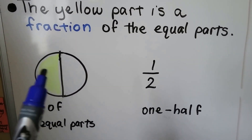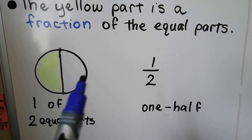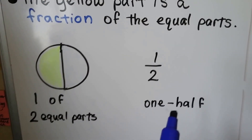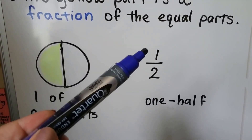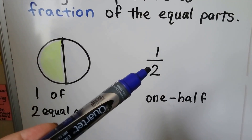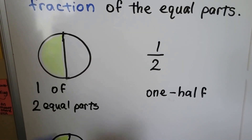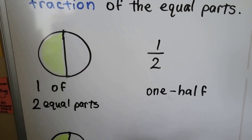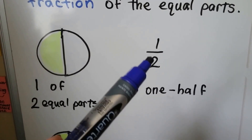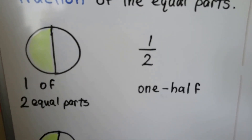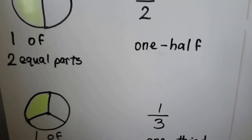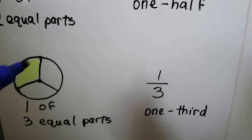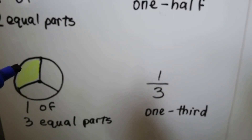It's one of the two equal parts — it's one half. You can look at this and see that it's one of the two equal parts. See how the one is over the two? This tells us that there are two parts and one of them is yellow.